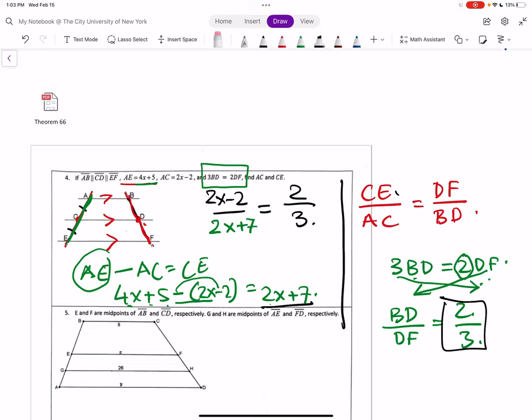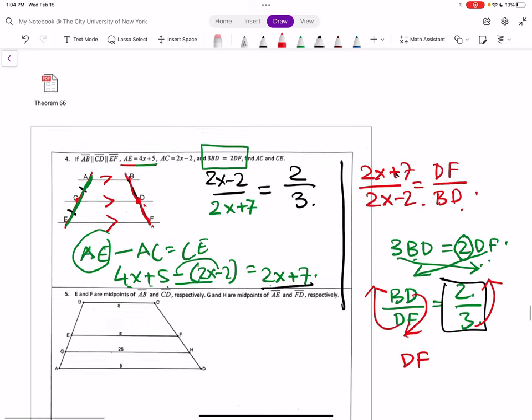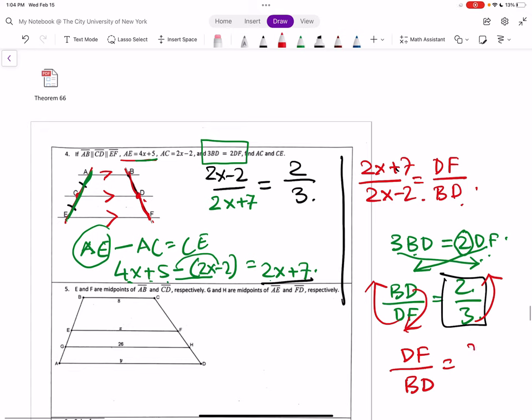Or if somebody thinks this way, CE over AC, so how you place it? You place your CE as what we have as CE is 2x plus 7. You are just flipping the thing. And AC is your 2x minus 2. And DF over BD becomes, they flip. They flip or you can conclude from there also. DF over BD is 3 over 2. So you can write here, 3 over 2.